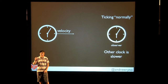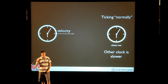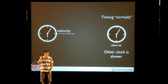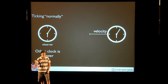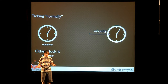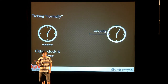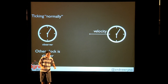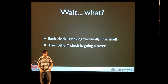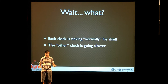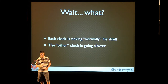Imagine you have two clocks. One is stationary in space relative to you, and the other one is moving. The stationary one is ticking normally, as you would normally see a clock. But the other one that's moving is ticking much slower. If you switch your reference frame and view the moving clock as stationary, it ticks normally. Each clock is ticking normally for itself and for someone who views it as stationary — the other clock always appears to go slower because it's moving.